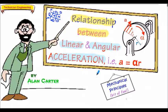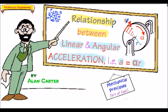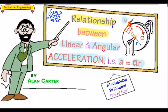This presentation overviews a standard derivation from an engineering reference source. The formula we're going to prove is a = αr, where a is the linear acceleration. That varies from zero linear acceleration at the center of the disc to a maximum linear acceleration at the rim of the disc.